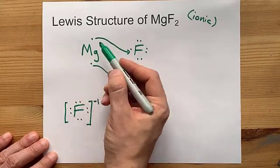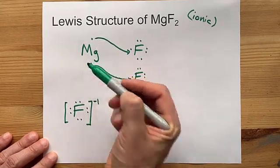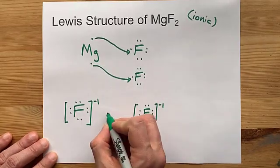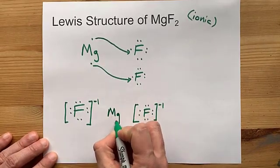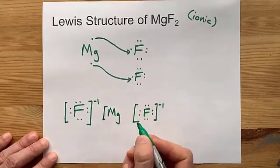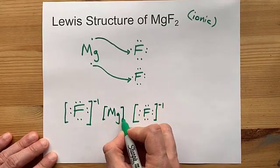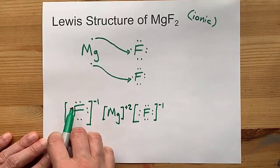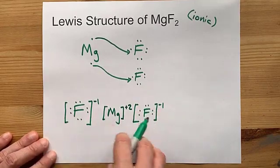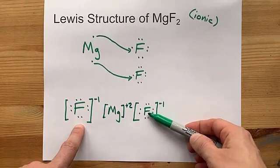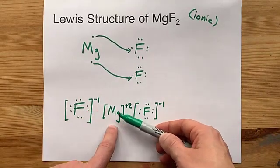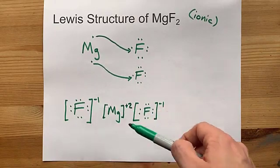And magnesium had two valence electrons with it and gave one electron each to the two fluorines. So now you can draw your Mg with no dots around it. After all, it gave away its electrons. And its charge is plus two. This is my preferred Lewis structure for magnesium fluoride.